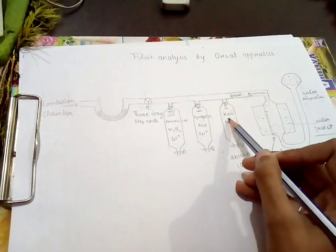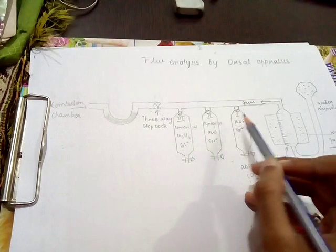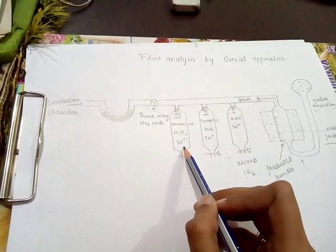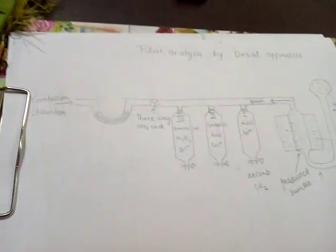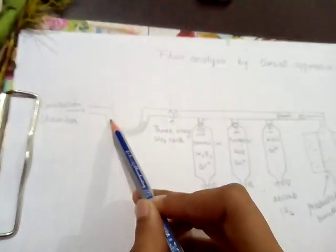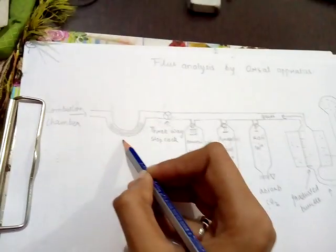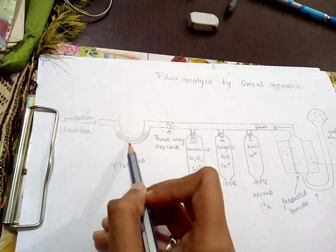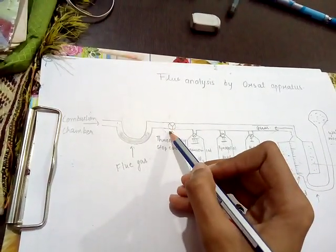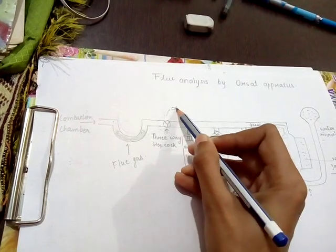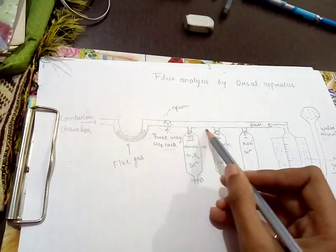The upper end of the burette is connected to three series of absorption bulbs. The first bulb contains potassium hydroxide solution, the second bulb contains pyrogallolic acid solution, and the third bulb contains ammoniacal cuprous chloride solution. The three-way stopcock is connected to a U-shaped tube which holds flue gases entering directly from the combustion chamber, and at this time the stopcock is open so gases are sent directly to the burette.